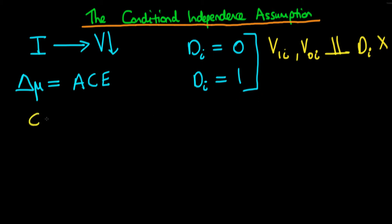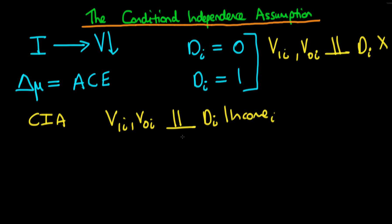What the conditional independence assumption states is that we might be able to say that V1I and V0I, conditional on the level of income in that particular state, might be independent of DI. Conditional on the observed characteristics of that state — of which income might be one — we should include all variables which might differ between the two groups. Then conditional on those variables, the potential level of violence may be independent of treatment status.